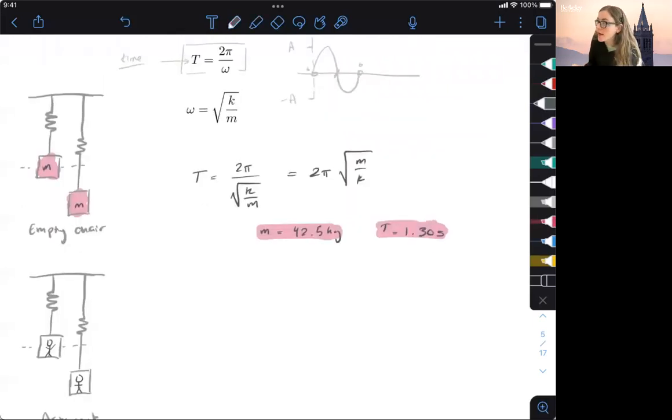All right, so if that's the case, let's go ahead and plug in and solve for the spring constant. So we have T equals 2π square root of 42.5 kilograms over K. So if we just rearrange this, and we know that our T equals 1.30 seconds, we're going to get K equals 993 Newton meters here. So just our units. So we have a spring constant.